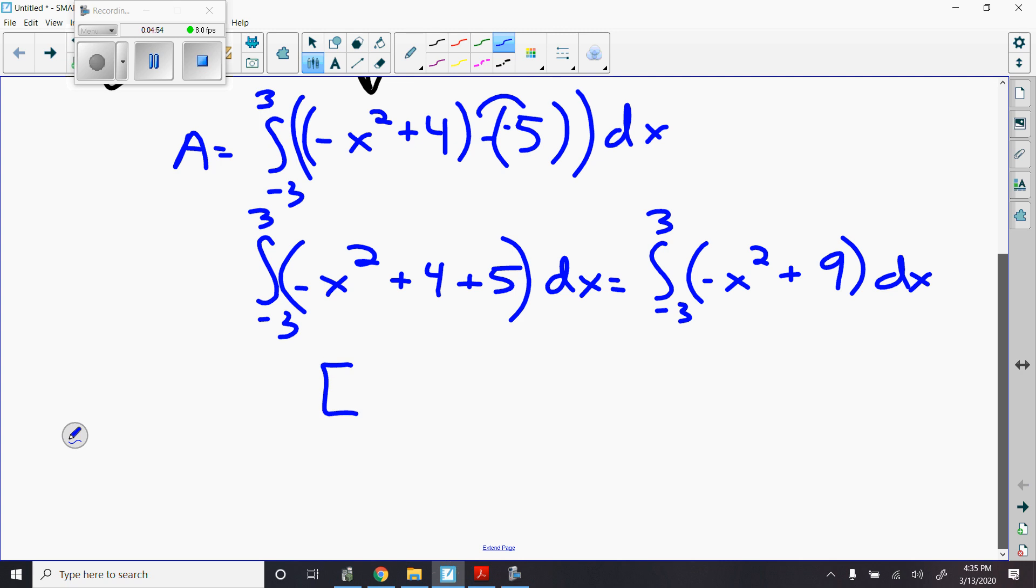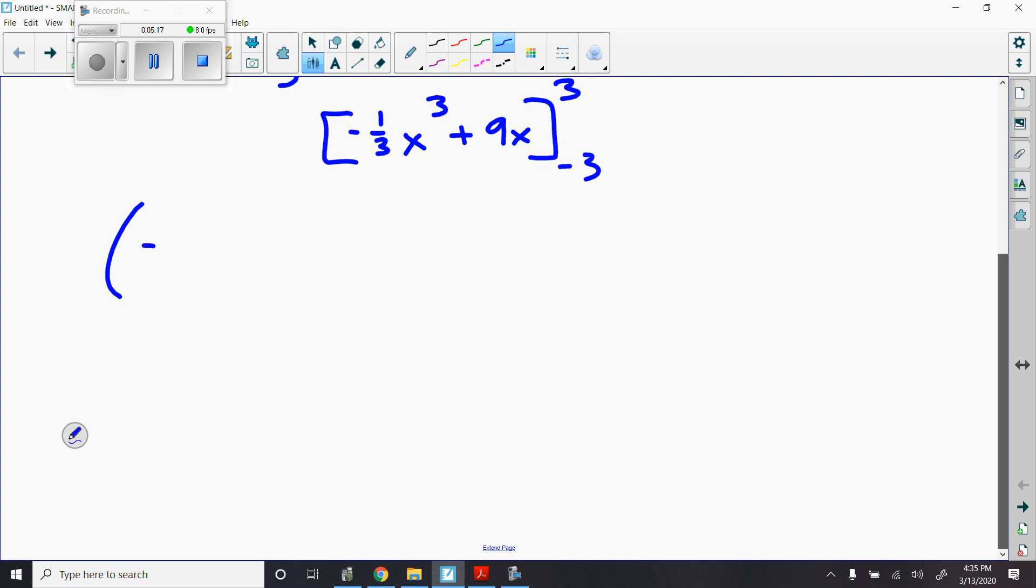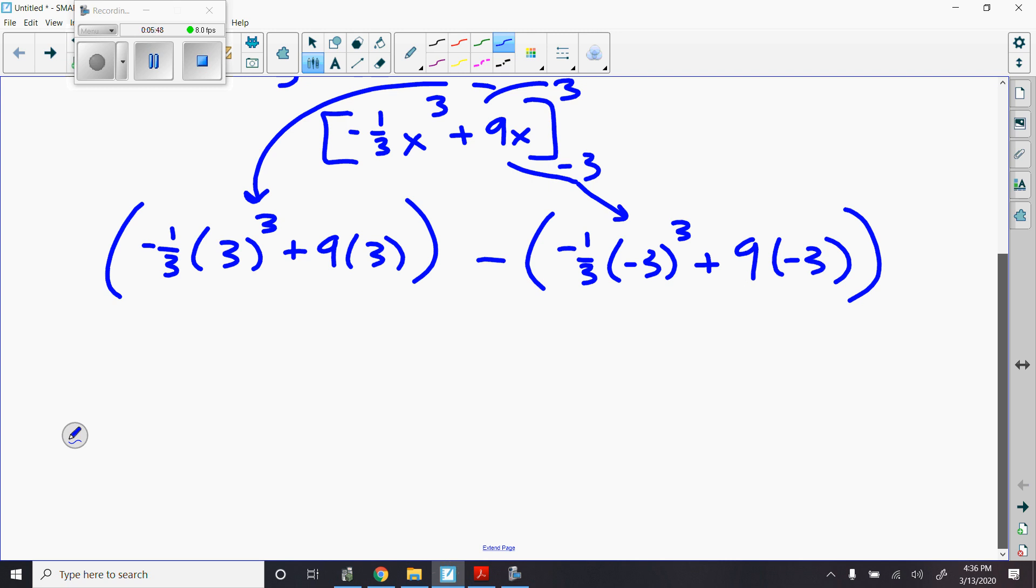To solve this thing, I'd have to bump and divide. I'm going to bump my power up to 3 and divide by 3 to get negative 1 third x cubed plus 9x, and I'm evaluating this thing from negative 3 to 3. So I'm going to plug in 3 first, which will give me negative 1 third times 3 cubed plus 9 times 3 minus negative 1 third times negative 3 cubed plus 9 times negative 3.